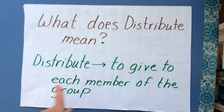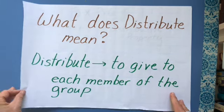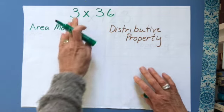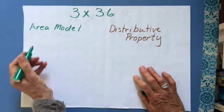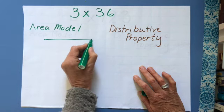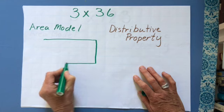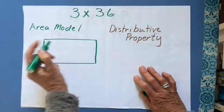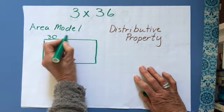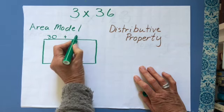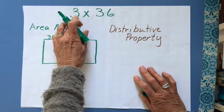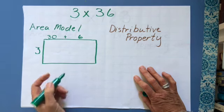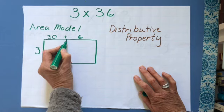Let's do a problem. We've learned how to do the area model, so let's do the area model of this problem. The first thing we do is make a box. The second thing we do is write each number in expanded form. This three here is really a 30, so I write 30 plus, and this six is really six ones, and this three in expanded form is just three.